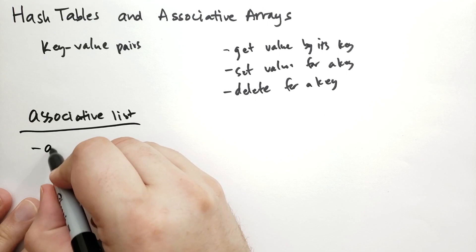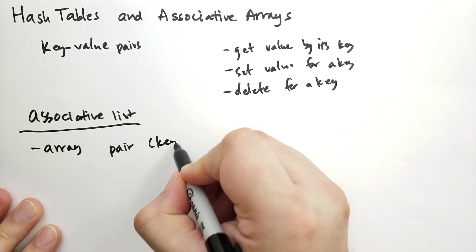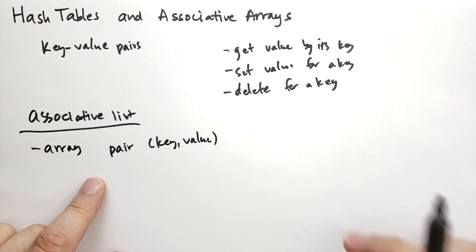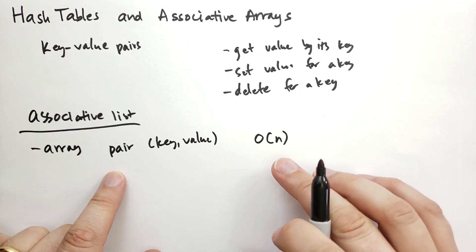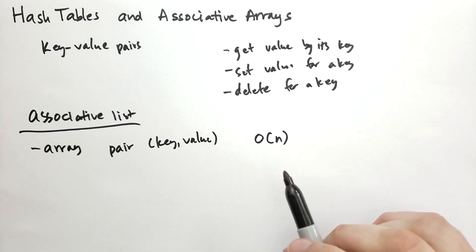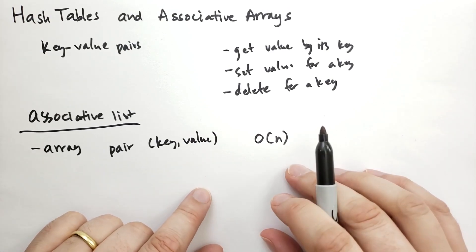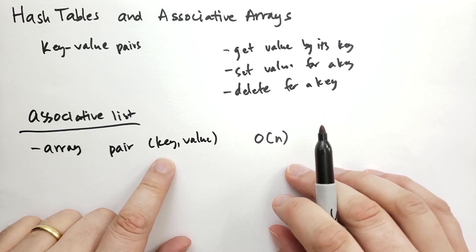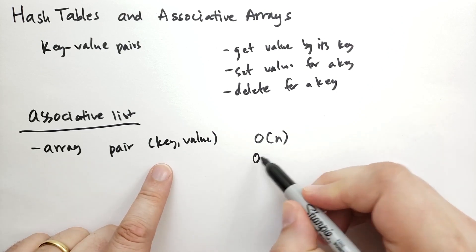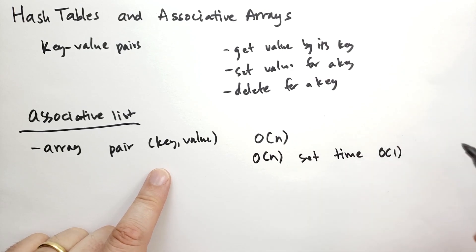In an associative list, you have an array where each value is a pair with the key and the value. The order of the array isn't very important. This takes O(n) space — each item in the associative array has to be stored as an element in the associative list. As key-value pairs are added, they're just appended to the end of the list, which is an O(1) operation. However, if you want to overwrite an existing key-value pair, you need to find that key in the list, which requires an O(n) lookup. So it requires O(n) time to set, but it's O(1) in memory.